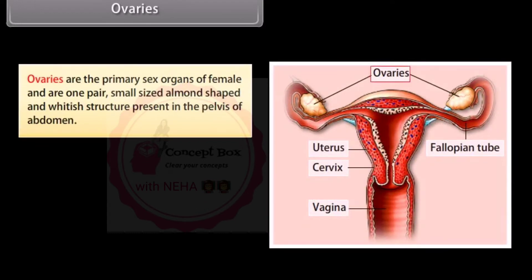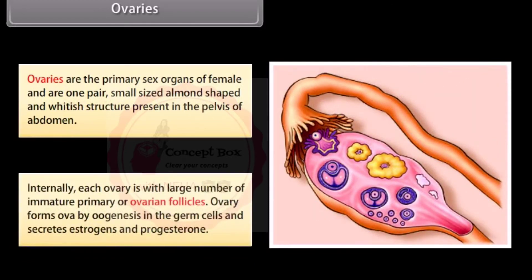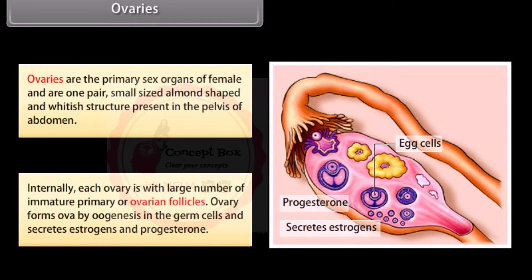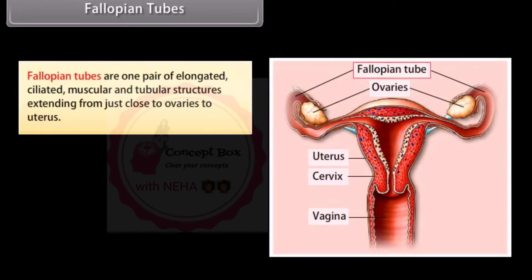Ovaries are the primary sex organs of the female and are one pair of small-sized, almond-shaped, whitish structures present in the pelvis of the abdomen. Internally, each ovary contains a large number of immature primary or ovarian follicles. The ovary forms ova by oogenesis in the germ cells and secretes estrogens and progesterone.